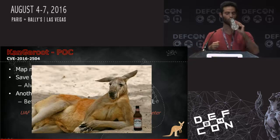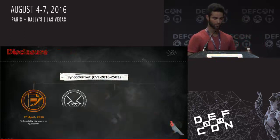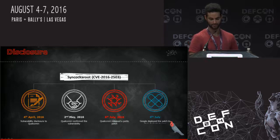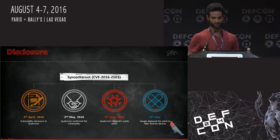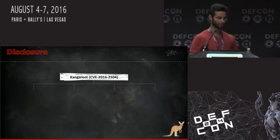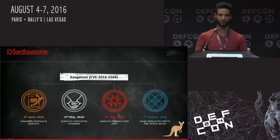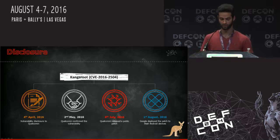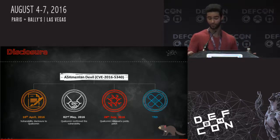Now, disclosure. Obviously we disclosed everything. We had a collaboration both with Google and with Qualcomm, and Qualcomm was very responsive and very collaborative. Koala Root was fixed, and a patch was released on the 6th of July, and Google deployed it to Nexus devices on the 6th of July as well. Kanga Root was also fixed on the 6th of July, but for some reason the patch was only deployed on the 1st of August. Ashmanian Devil — I'm sorry to disappoint you. Even though Qualcomm released a patch, no device was fixed so far — at least no OEM that we know about. So, you're all vulnerable. Congratulations.